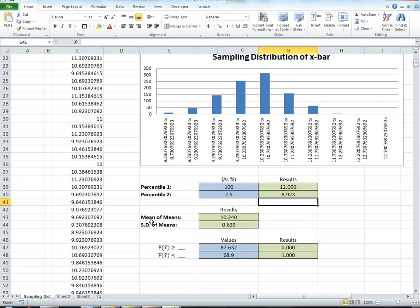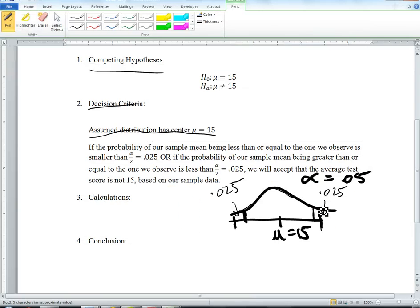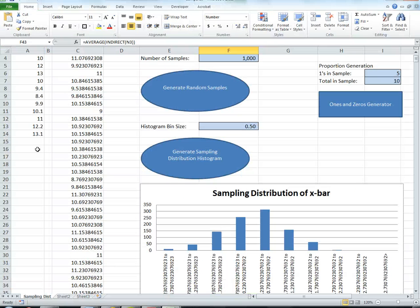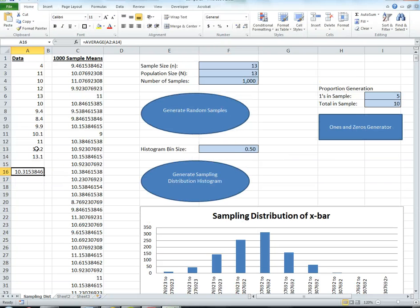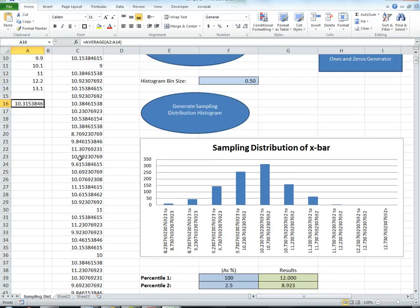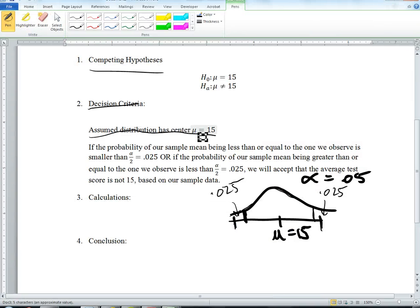But keep in mind that we have one little problem, and that problem is that the mean of this distribution is 10.24, because the average of this current data, of that data right there, is 10.3.